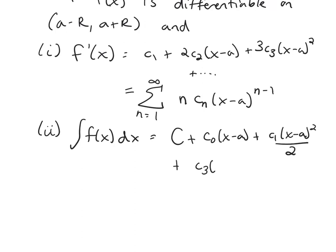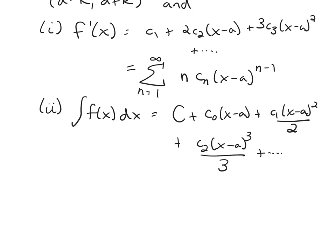Plus c2(x-a)^3/3, and so forth. So if I write this with a summation notation, it would be C plus the sum n equals 0 to infinity, cn(x-a), you add one to the power when you integrate a polynomial and divide by that number.